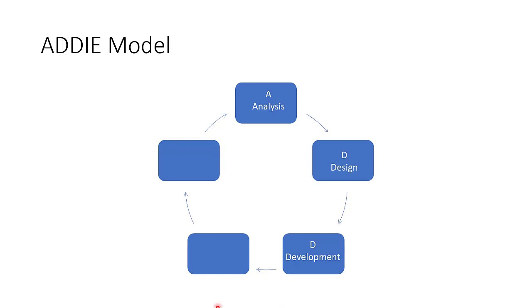The next process is Implementation. You have analyzed, designed, and developed. At the implementation stage you deploy the content for users, but before doing that you need to put the content to a test to see whether it meets the purpose for which it was prepared. There are two ways: beta testing or pilot testing.